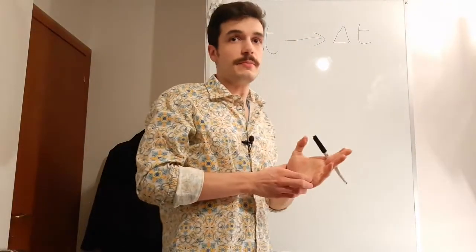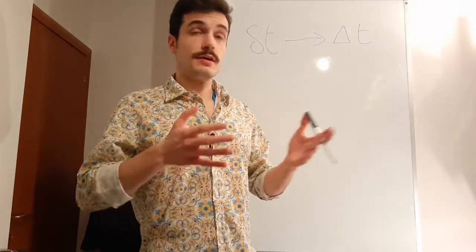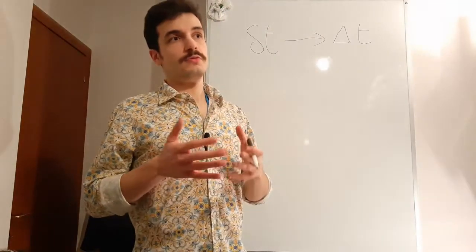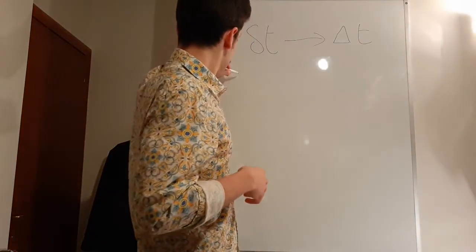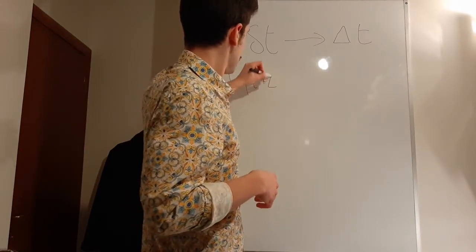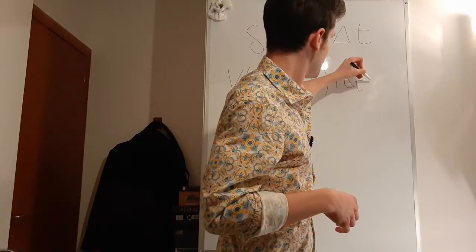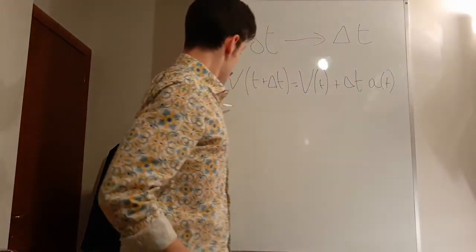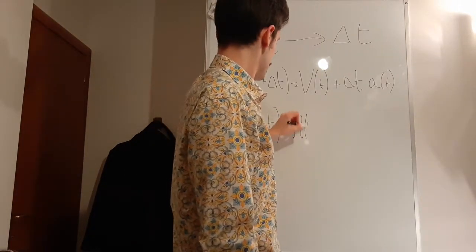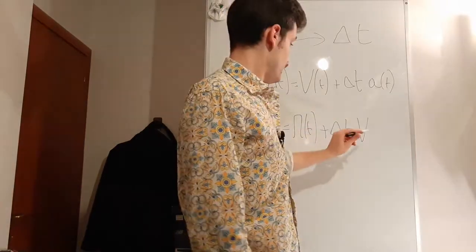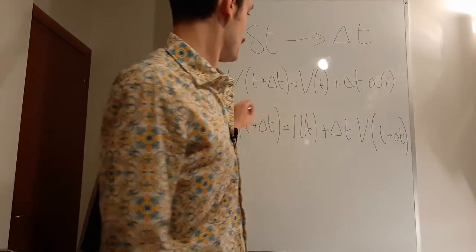So that's already something we have to deal with. The most naive idea we could have is to use formulas that are incredibly similar to the ones we use normally in classical physics — formulas very similar to those of uniformly accelerated motion. So V at time t plus delta t equals V of t plus delta t times the acceleration at time t. And the position at t plus delta t equals position at t plus delta t times the velocity at t plus delta t, since we have updated the velocity and thus update the position.